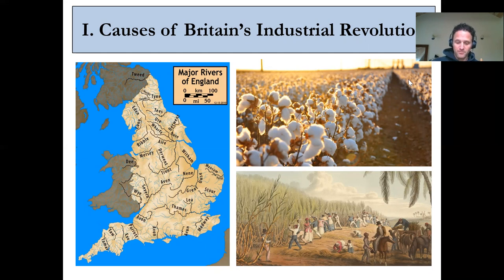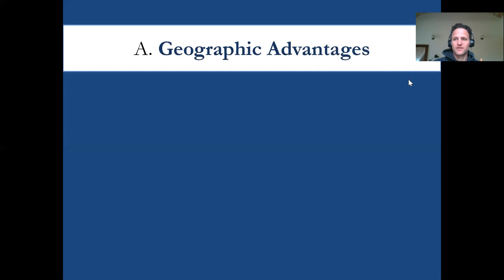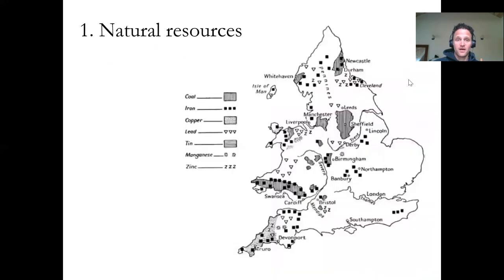It begins in Europe but, as you guys know, it spreads all around the globe. Historians have put forth a lot of different conflicting reasons to explain why the Industrial Revolution got started, and especially why it got started in Britain. We're going to look at some of the causes of Britain's Industrial Revolution first. If you remember from our earlier lecture, Britain has geographic advantages that allow it to industrialize. The first geographic advantage is abundant access to coal and iron and other natural resources used in factories. Access to coal, a cheap and abundant energy source, is probably the most important. England had coal deposits close to the surface — they were easy to mine.